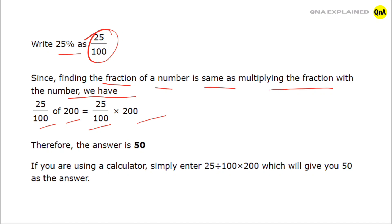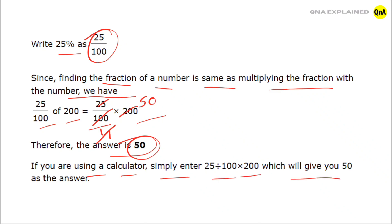First we solve it. 25 fours are 100, and 4 fifties are 200. So the answer is 50. If you are using a calculator, simply enter 25 divided by 100 into 200, which will give you 50 as the answer.